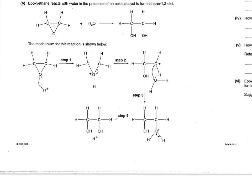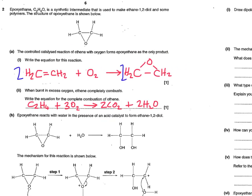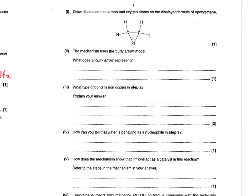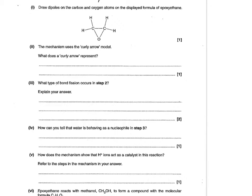The next part of the question gives the mechanism for the reaction with water in the presence of an acid to form ethane-1,2-diol. It's reasonably complicated — nothing like what you'd expect in an A-level paper — so they're just telling you what the mechanism is. The first thing they want is to draw dipoles on the carbon and oxygen atoms in the displayed formula of epoxy ethane. Carbon is less electronegative than oxygen, so it should form a permanent dipole. The carbon is delta-plus and the oxygen is delta-minus. Then it says the mechanism uses the curly arrow model. It becomes apparent this question is not about knowing epoxy ethane — it's about applying what you know about mechanisms to an unfamiliar situation. It's deliberately deductive: can you deal with an unfamiliar situation?